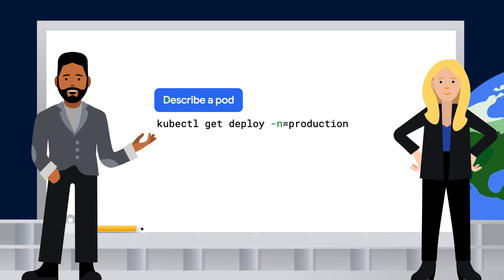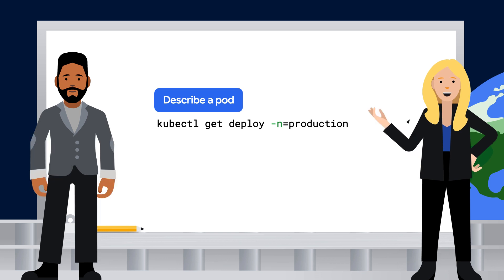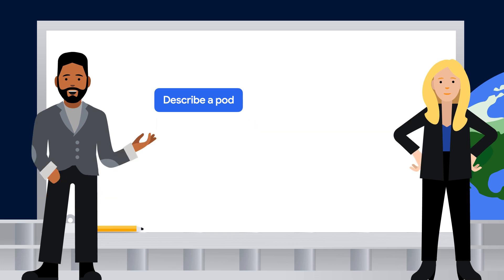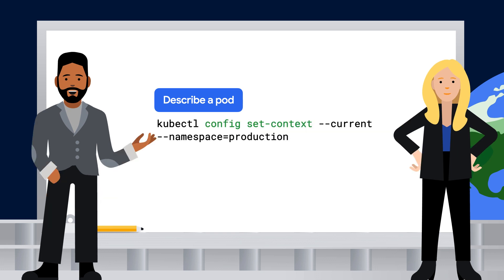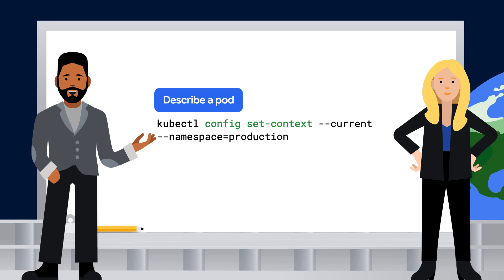It still seems annoying to have to type the namespace into every command. Well, you're in luck. If you're going to be working out of the same namespace for a while, there's a way to set kubectl to automatically use that namespace for all subsequent kubectl commands. To do that, you would use kubectl config set-context.